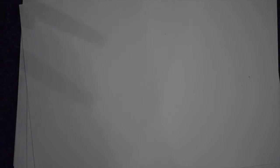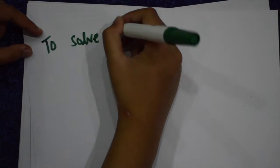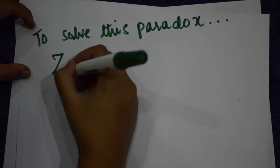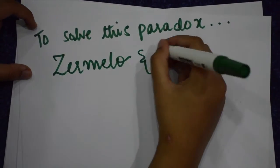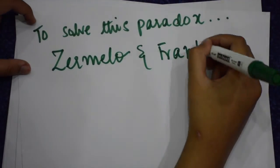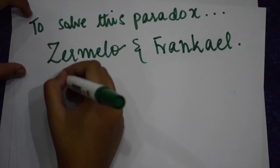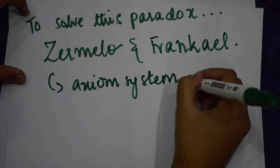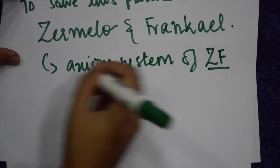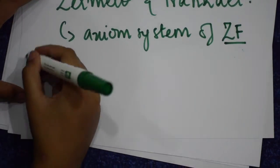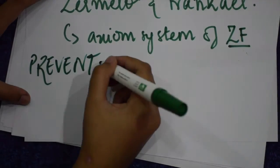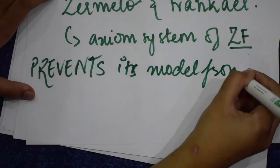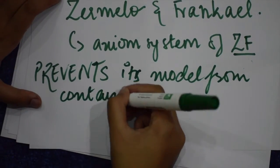To solve this paradox, mathematician Zermelo and Fraenkel created the axiom system ZF. Axioms of ZFC prevents its model from containing urelements. Urelements are elements of sets that are not themselves sets.